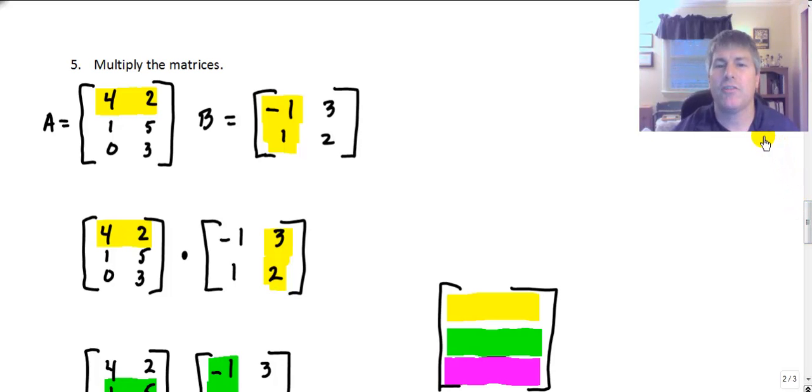Multiplying matrices, that's a little bit more complicated. Okay? Because we have, you know, a series of rows and columns. So let's multiply these two matrices. And if you follow the highlighting, you'll see that we're going to multiply the elements in the first matrix. We're going to multiply the rows by each of the two columns. So we'll multiply 4 and 2, those two elements, by negative 1 and 1. And then we're going to multiply 4 and 2 by 3 and 2. And we're going to do a little addition here to make this work out.